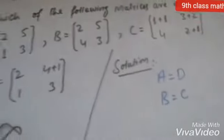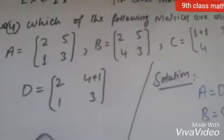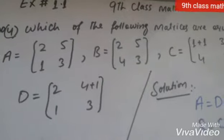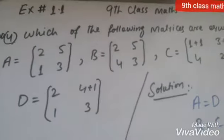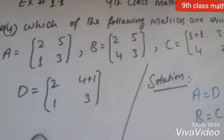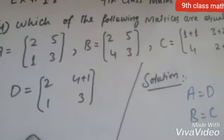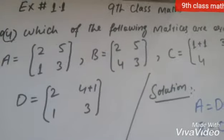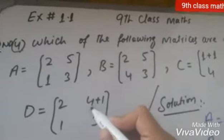A matrix, so we have 2, 5, 1, 3. Then the D matrix, so we have 2, 4 plus 1 is 5, 1, 3.